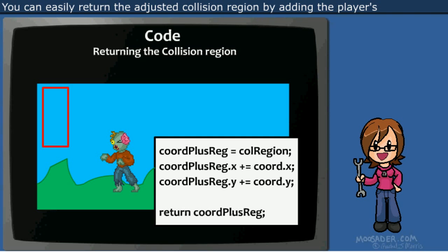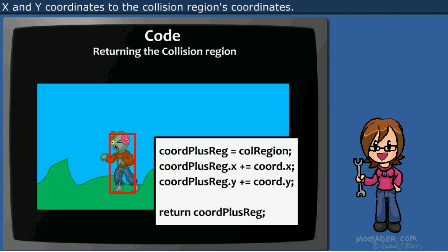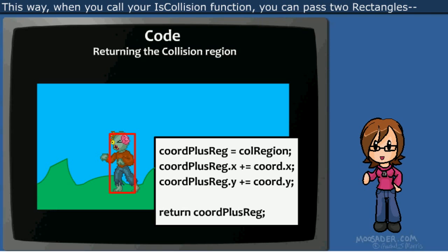You can easily return the adjusted collision region by adding the player's X and Y coordinates to the collision region's coordinates. This way, when you call your isCollision function, you can pass two rectangles, one for object A and one for object B.